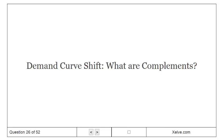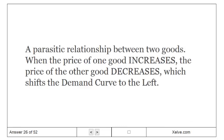What are complements? A parasitic relationship between two goods. When the price of one good increases, the price of the other good decreases, which shifts the demand curve to the left.